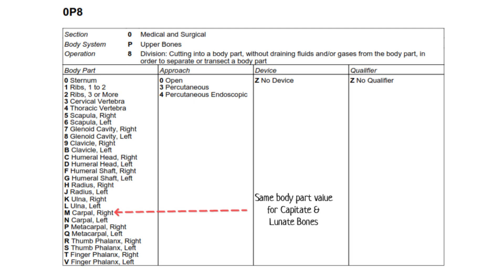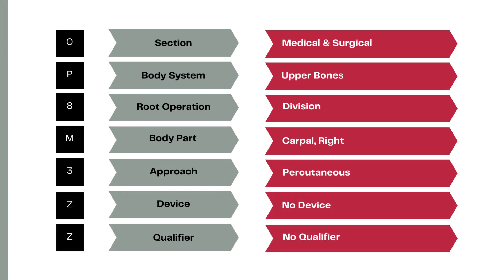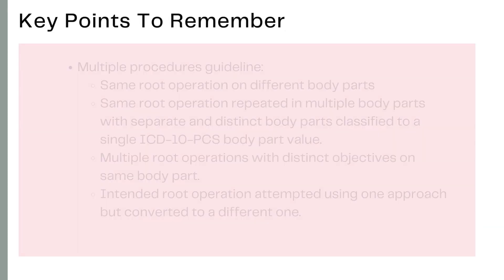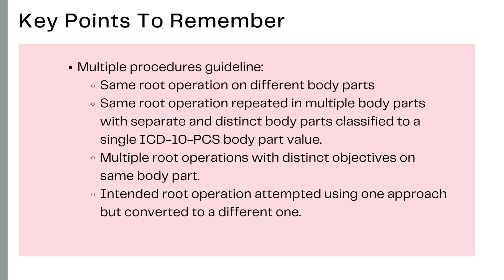There is no device for the sixth character, and the seventh character is Z for the qualifier value. So the complete code for the percutaneous osteotomy of the capitate and lunate bones of the right hand is 0P8M3ZZ. Since both the capitate and lunate bones lead to the same Carpal bone body part value in the body part key, this same code must be reported twice — once to cover the capitate bone and once for the lunate bone.